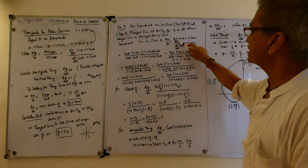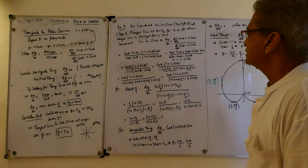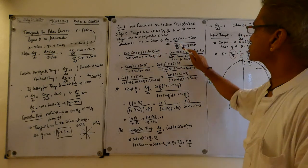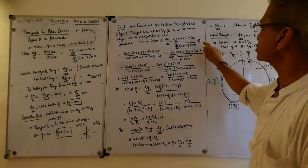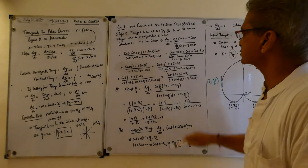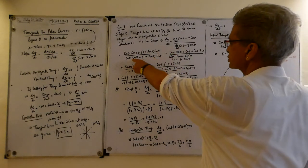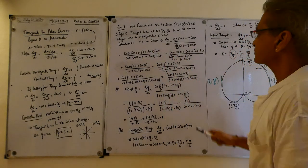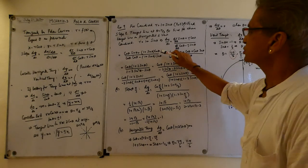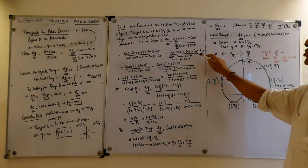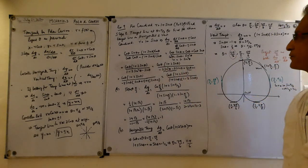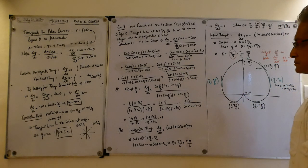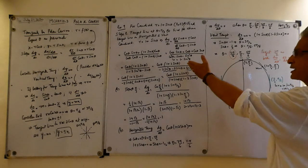To find the vertical and horizontal tangent lines, you need the slope. Taking dr/dθ of r=1+sinθ gives cosθ. So dy/dθ is cosθ·sinθ plus r·cosθ, and with r equal to 1+sinθ, expanding gives cosθ·sinθ plus cosθ plus cosθ·sinθ, which simplifies to 2cosθ·sinθ plus cosθ. For dx/dθ, you get cosθ·cosθ minus sinθ·r, giving cos²θ minus sinθ minus sin²θ.